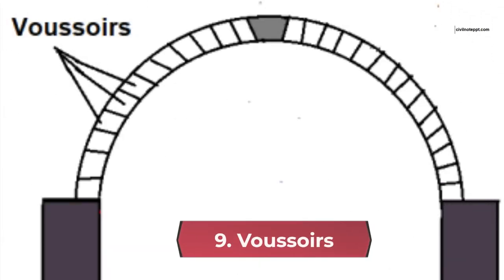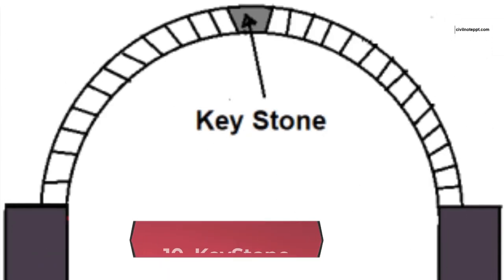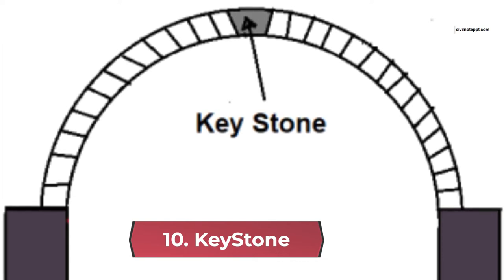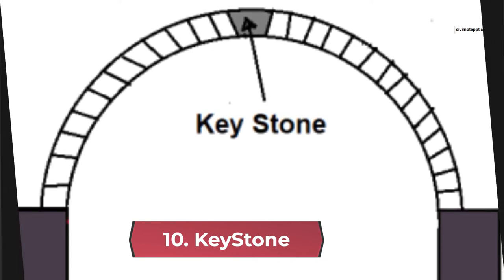9. Voussoirs. Voussoirs are wedge-shaped units by which the arch ring is created. These block units may be of brick, stone, or plain cement concrete. Voussoirs are also called arch blocks. 10. Keystone. Keystone is also a wedge-shaped block unit, but it is larger than the voussoirs. This unit is placed at the highest point of the arch.